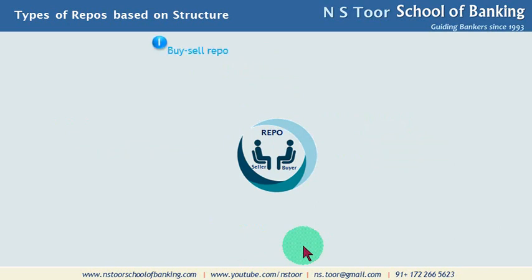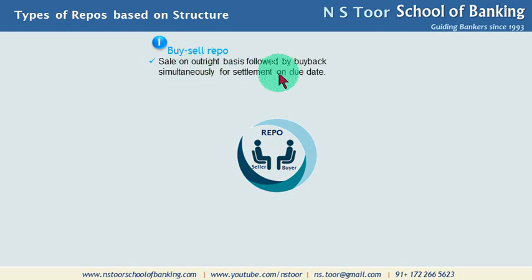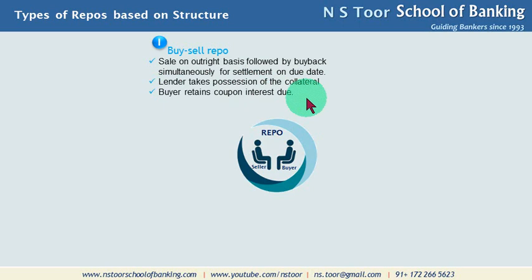Now let us see repos based on structure. The first one is buy-sell repo. In buy-sell repos, there is a sale on an outright basis followed by a buyback simultaneously for settlement on the due date. The buyer takes possession of the security as collateral. The buyer retains the coupon interest due on the security during that period, so that interest will be kept by the buyer. The Indian market follows this type of repo.